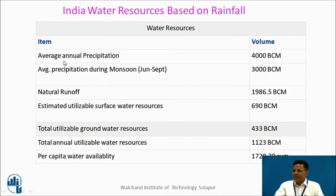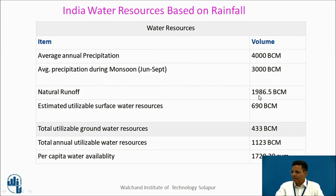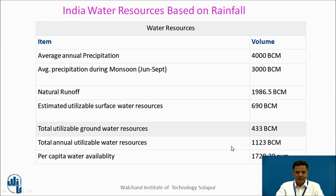From rainfall, India receives average annual precipitation of approximately 4,000 billion cubic meters. Average precipitation during the monsoon is 3,000 billion cubic meters, which is 75%. Natural runoff is 1,986.5 billion cubic meters. Estimated utilizable surface water resources are 690 billion cubic meters. Total utilizable groundwater resources are 433 billion cubic meters. Total annual utilizable water resources, including surface and groundwater, are 1,123 billion cubic meters. Per capita availability is 1,720.29 cubic meters per person.